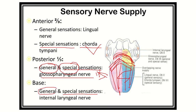For the extreme posterior part or base of the tongue, both general and special sensation are carried by the internal laryngeal nerve, which is a branch of the superior laryngeal nerve, itself a branch of the tenth cranial nerve — the vagus nerve.